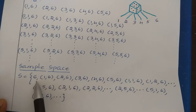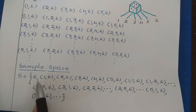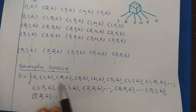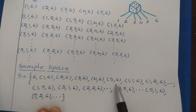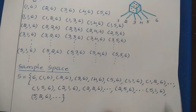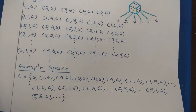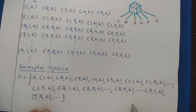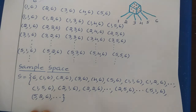So the sample space S = {6, (1,6), (2,6), (3,6), (4,6), (5,6), (1,1,6), (1,2,6), (1,3,6), (1,4,6), (1,5,6), (2,1,6), (2,2,6), (2,3,6), (2,4,6), ...}. This pattern continues indefinitely, as the die is thrown repeatedly until the number 6 appears, meaning the sample space has infinitely many possible outcomes.